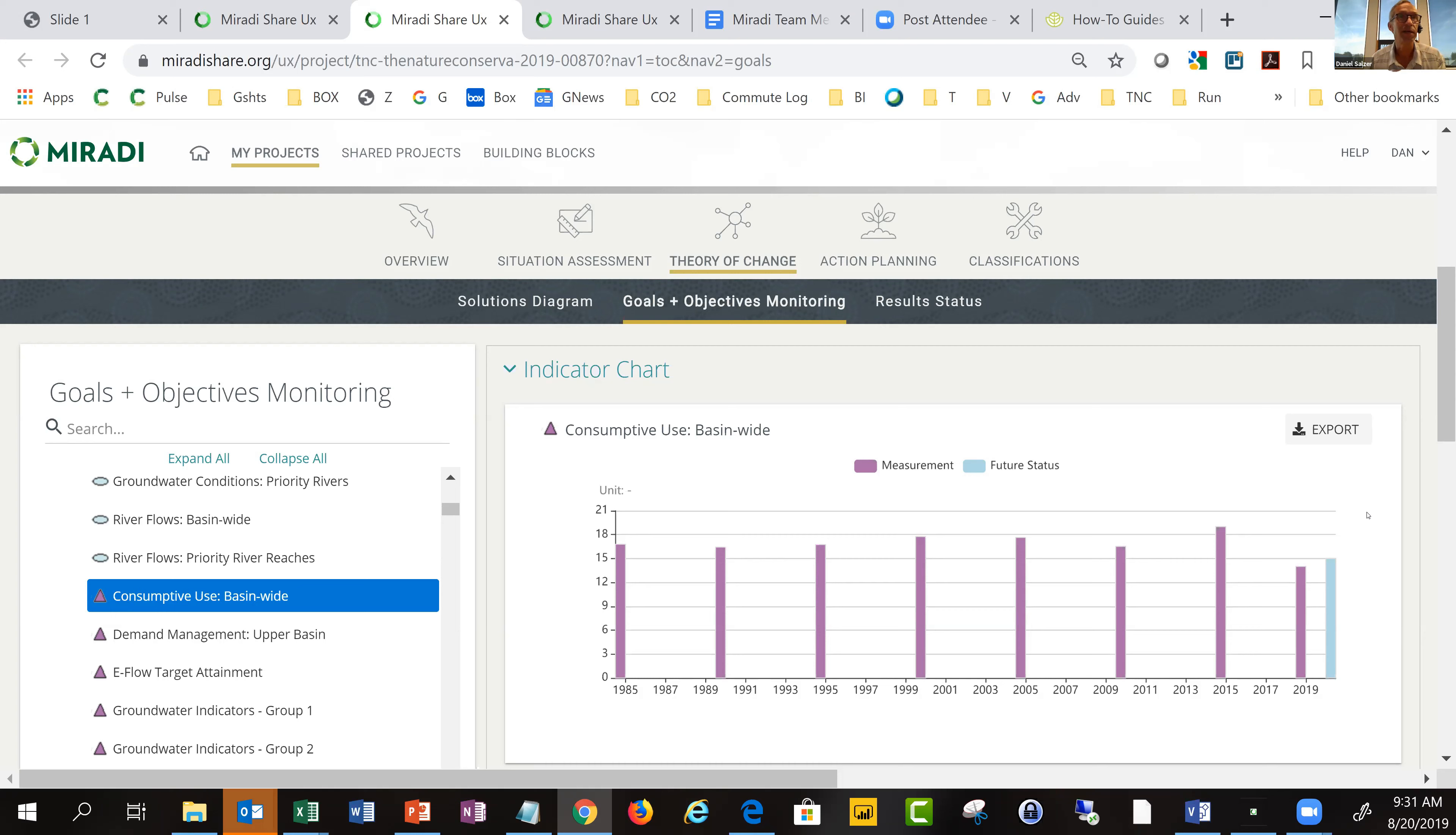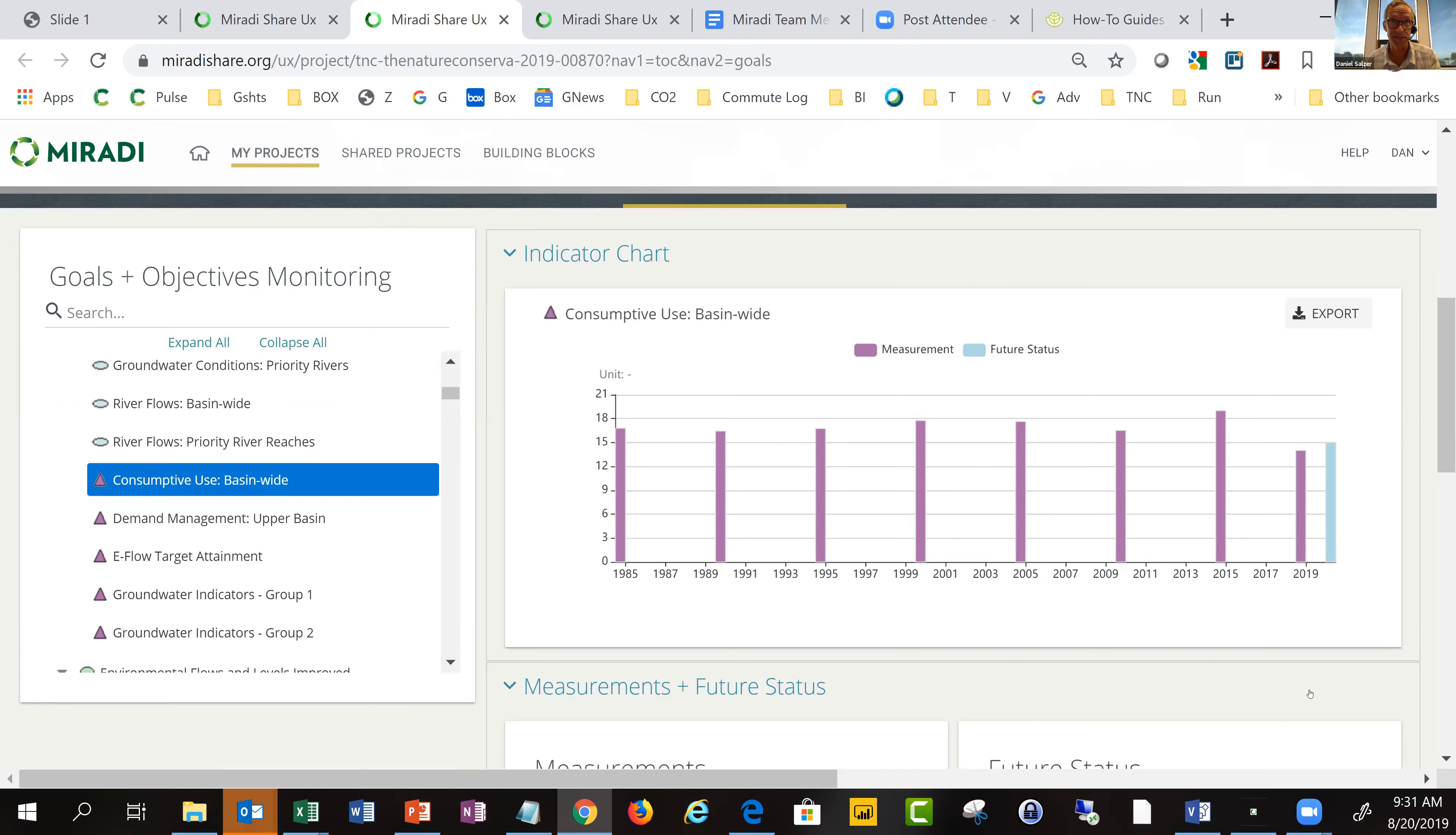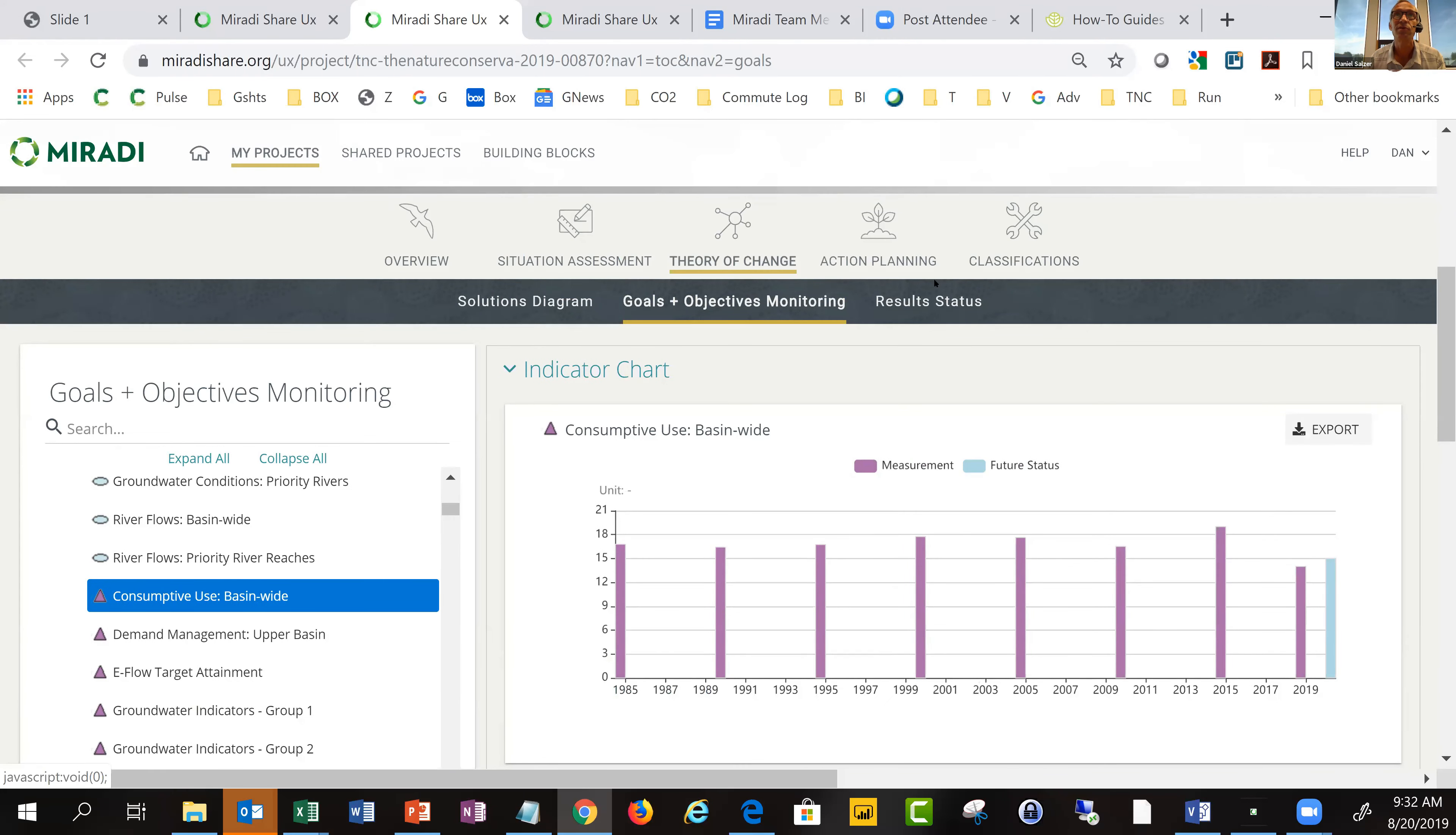Historically, a lot of the editing and addition of information had to be done in Miradi desktop. Miradi desktop and Miradi Share talk to one another. You can send data back and forth. The shift has been to move more of the transactional information like progress ratings or indicator measurements to the online environment.